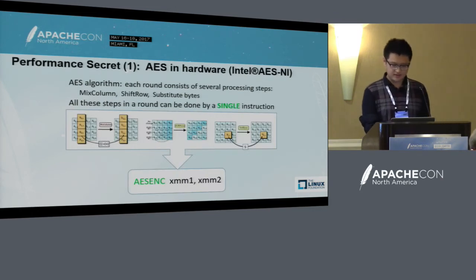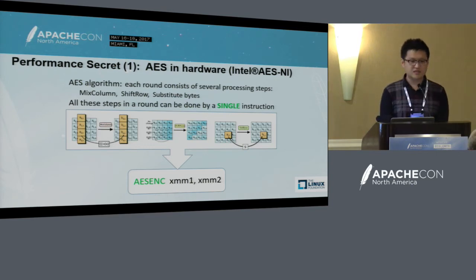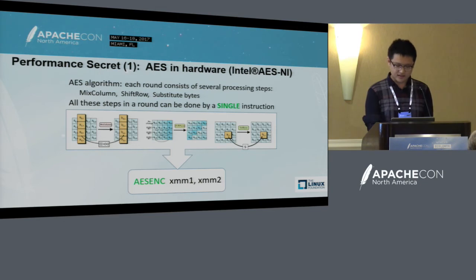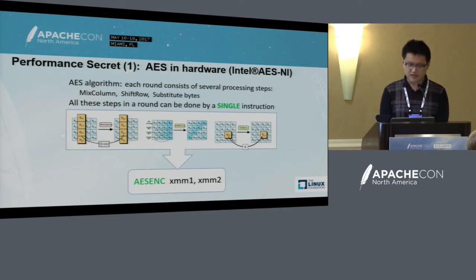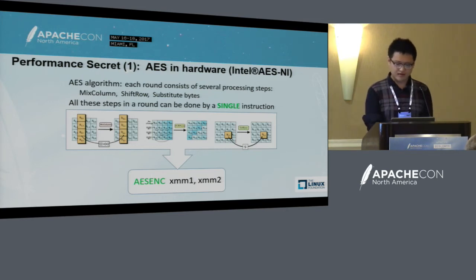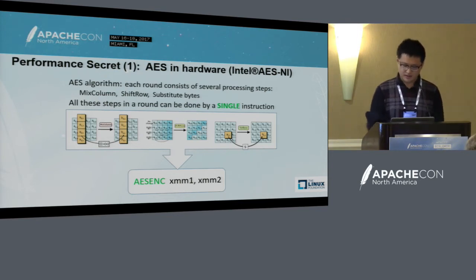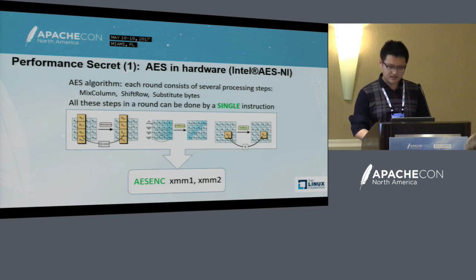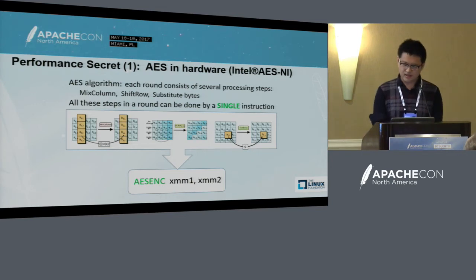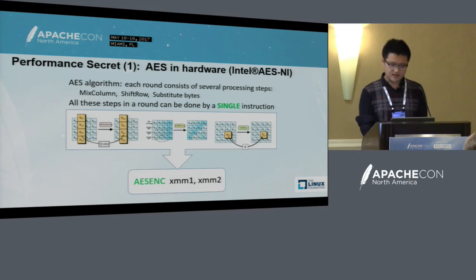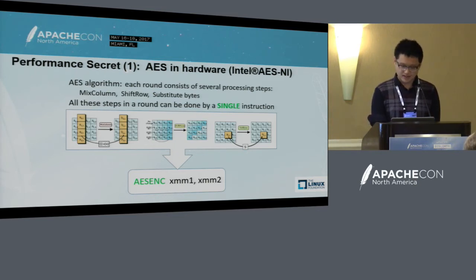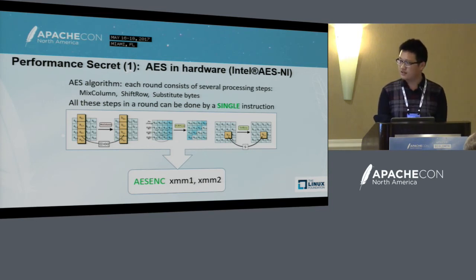Here is the performance secret. Secret number one: AES-NI technology. NI means new instruction. There are a few such instructions — let's take AESENC as an example. The AES algorithm has about 10 to 14 rounds, and each round consists of several complex and time-consuming processing steps. With AES-NI, only a single instruction is needed and the CPU will do all this work for you, improving performance remarkably. AES-NI is also enabled in JVM since JDK 8 update 45.